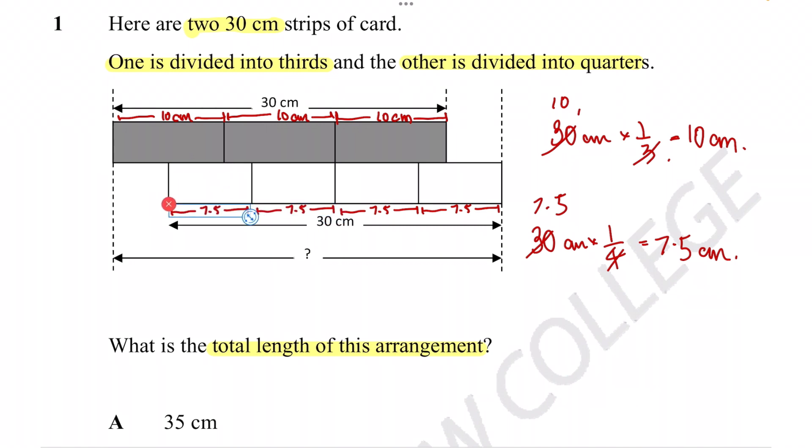Now, now that we know the individual segments, we can see when looking for the total length of this specific arrangement, the issue is that we just need to know what this length is. Because we know already what this length is, it's equal to 30 centimeters. How do we then figure out this missing length provided by the second strip of card?